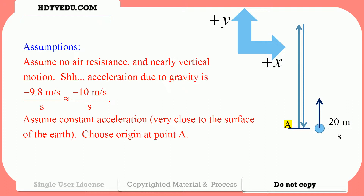Horizontal motion: positive axis to the right, negative axis to the left. Vertical motion: positive Y is vertically up, negative Y is vertically down. Choose origin at point A.